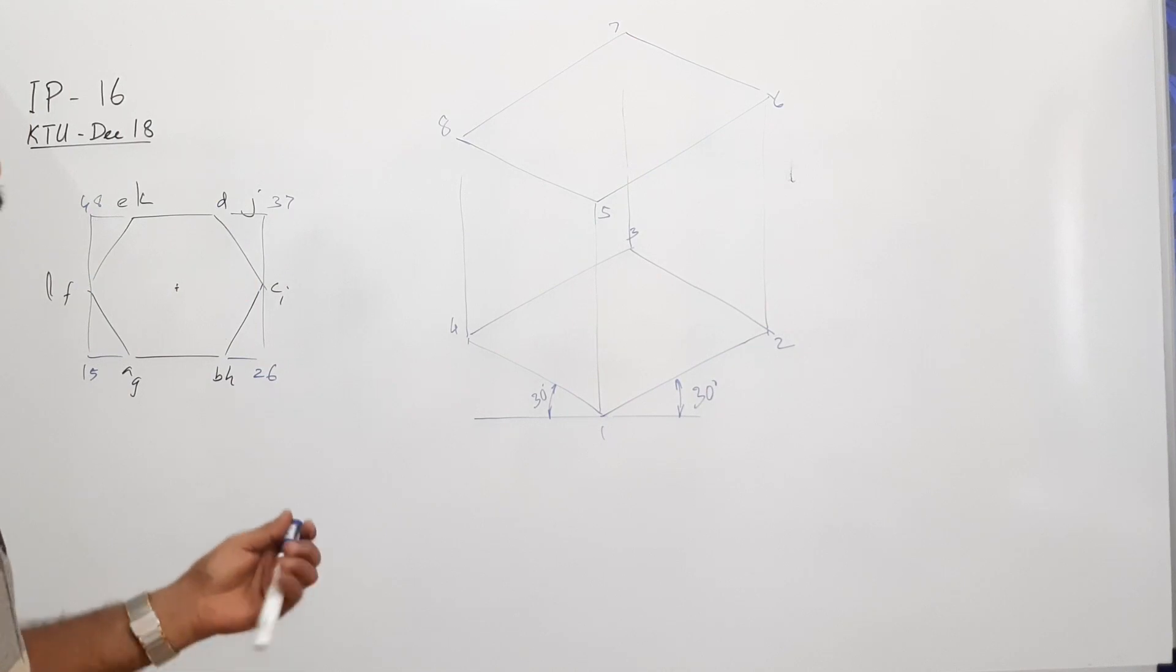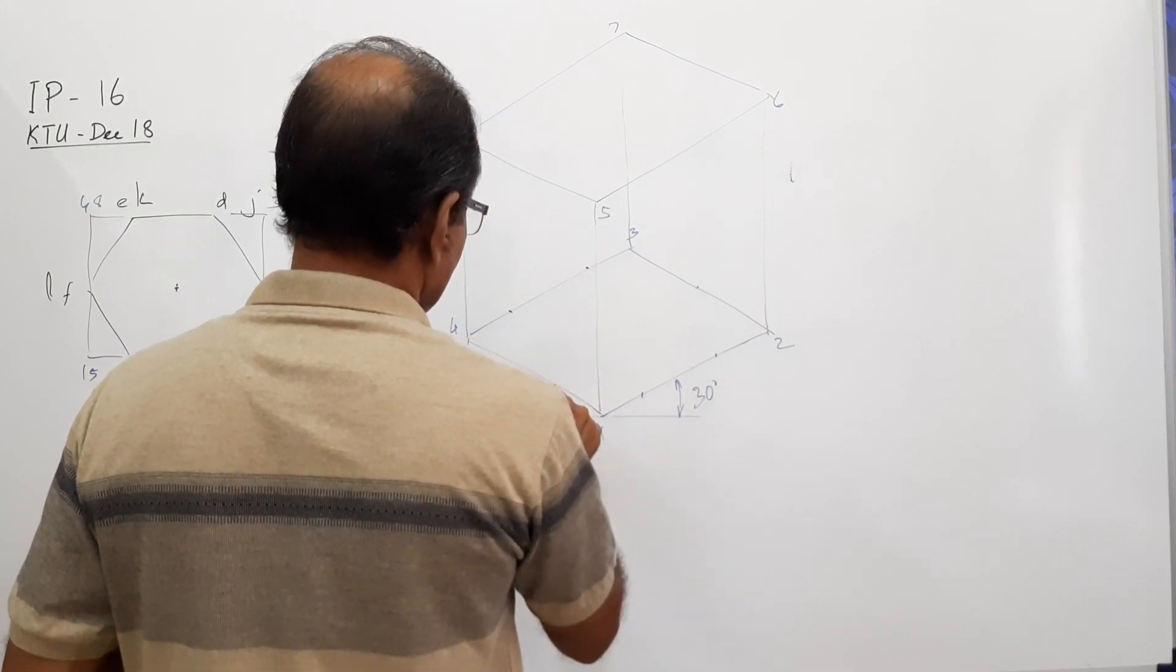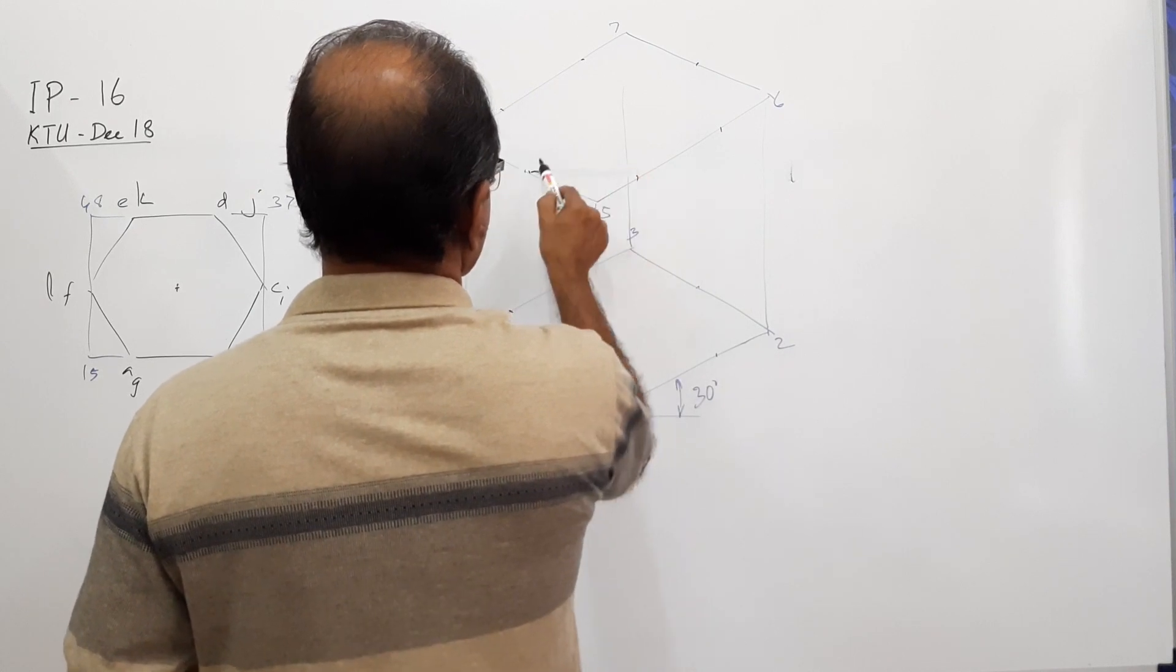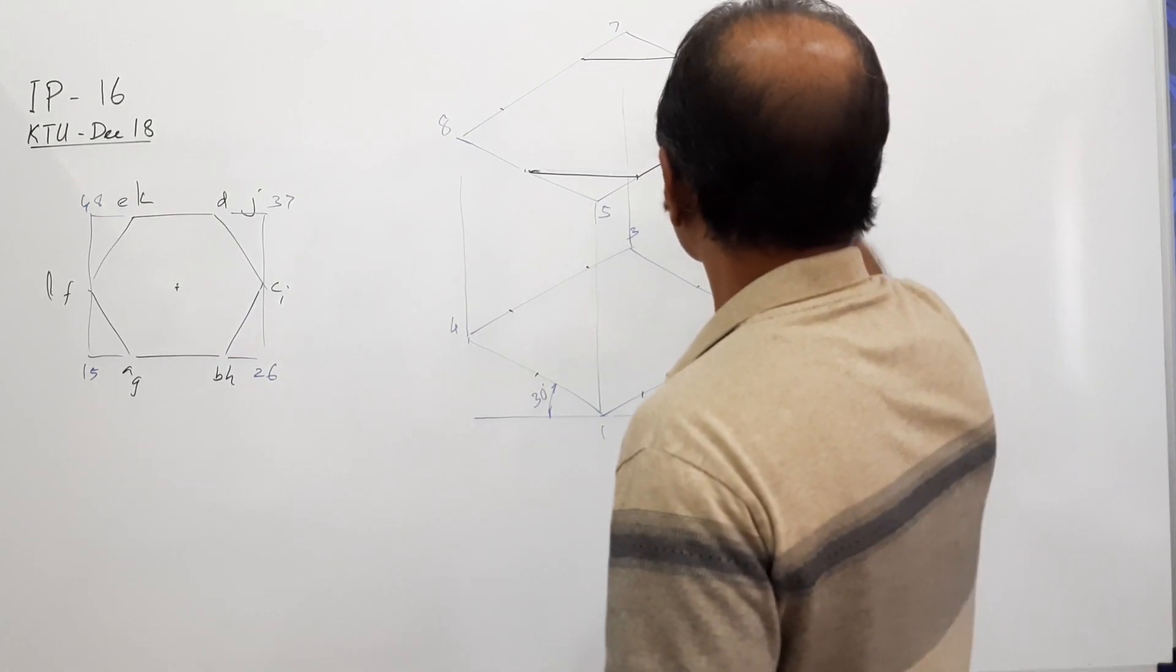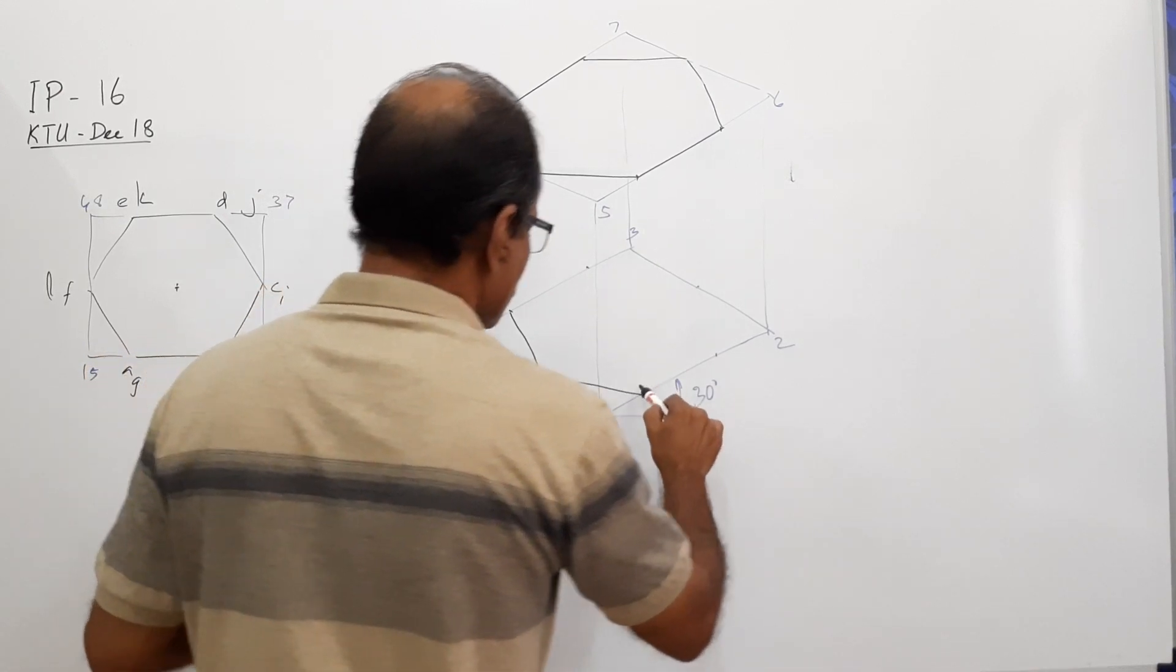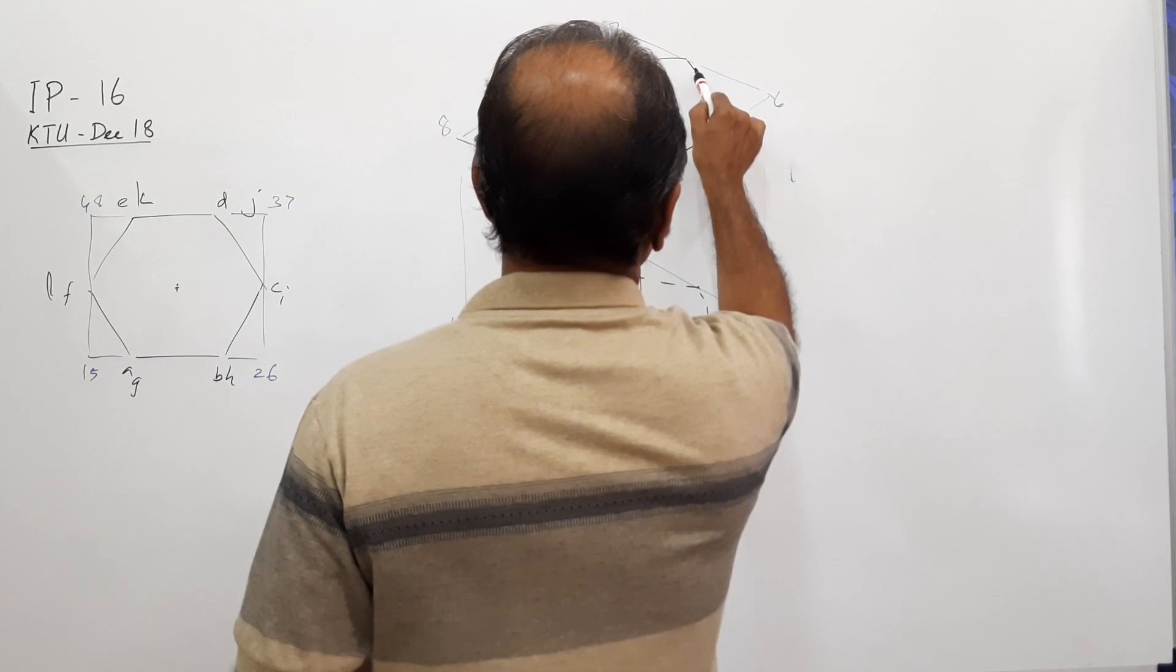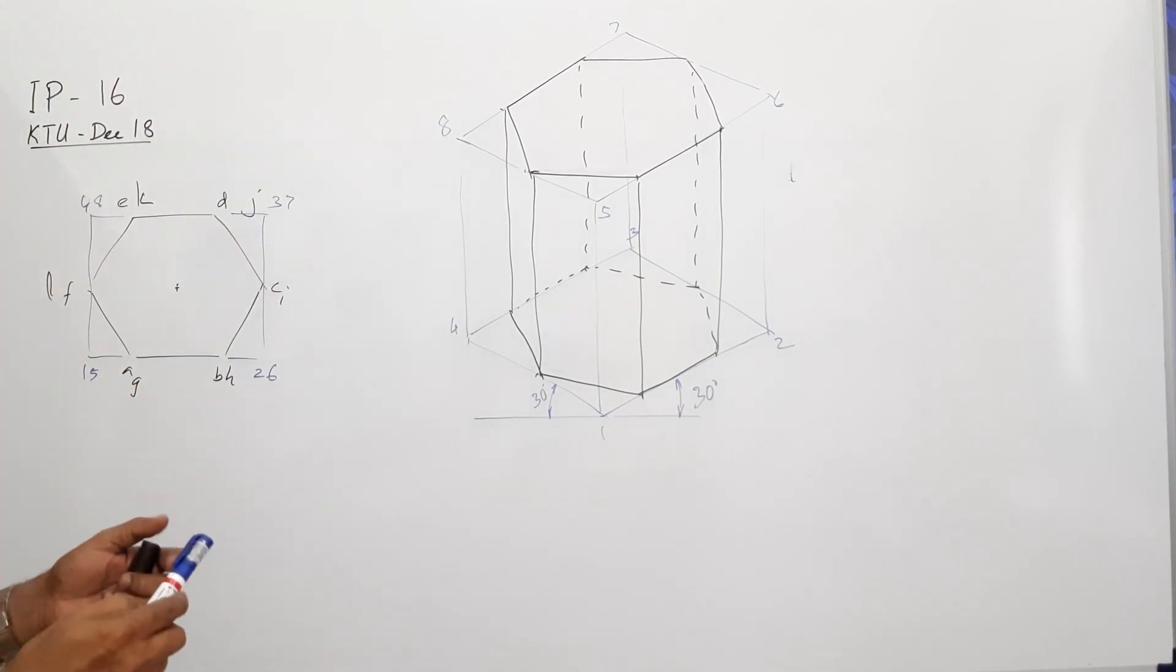Connect them. Top of the prism. Hexagonal prism. Now inside this hexagonal prism you have got the circular hole.